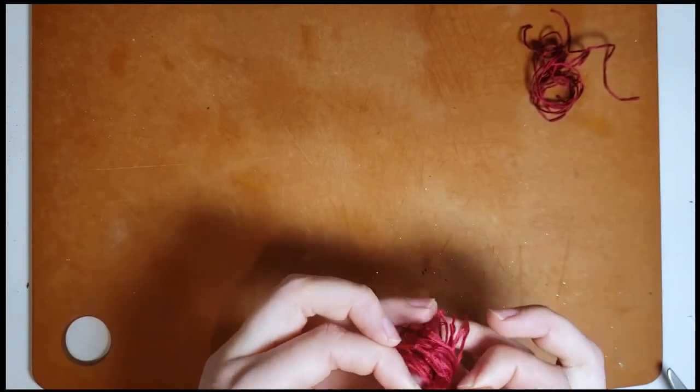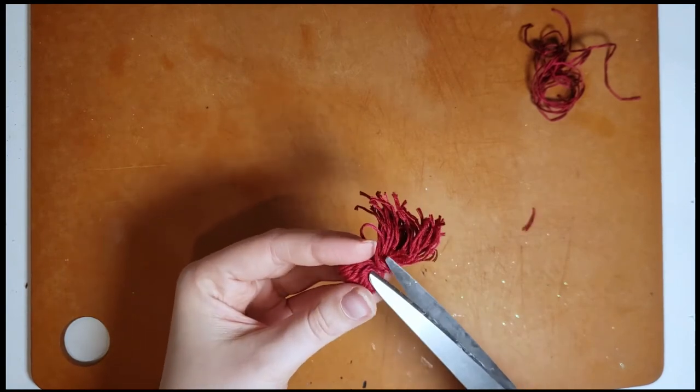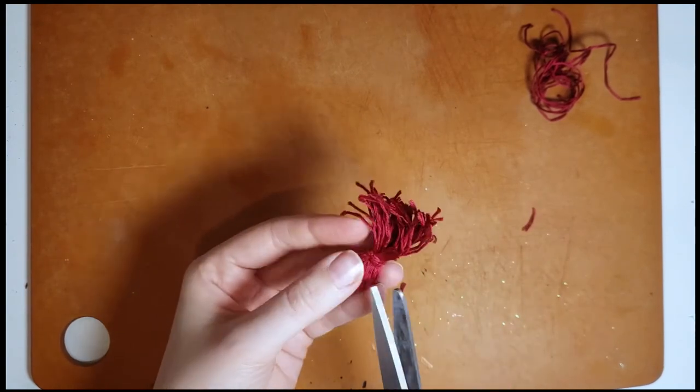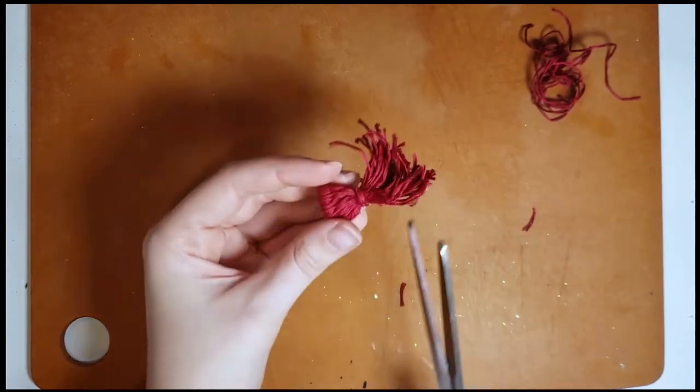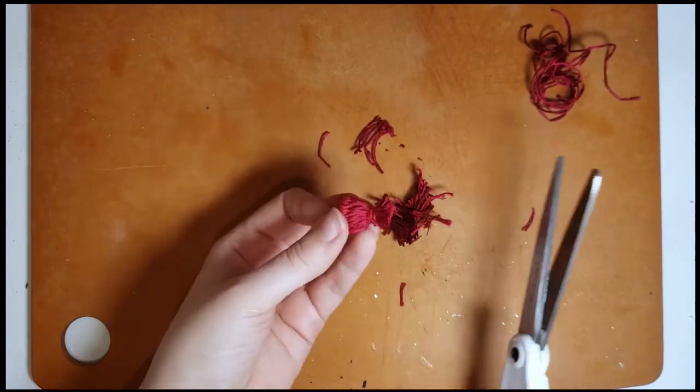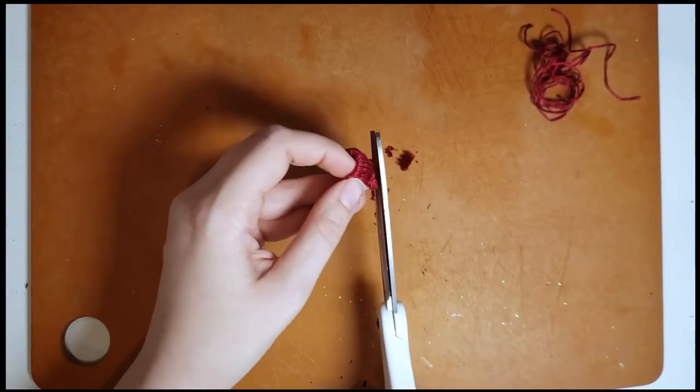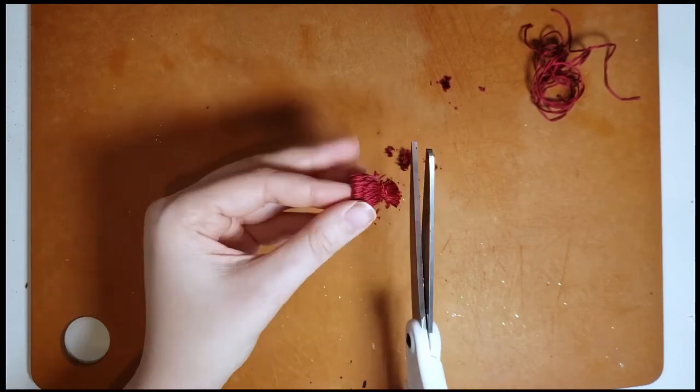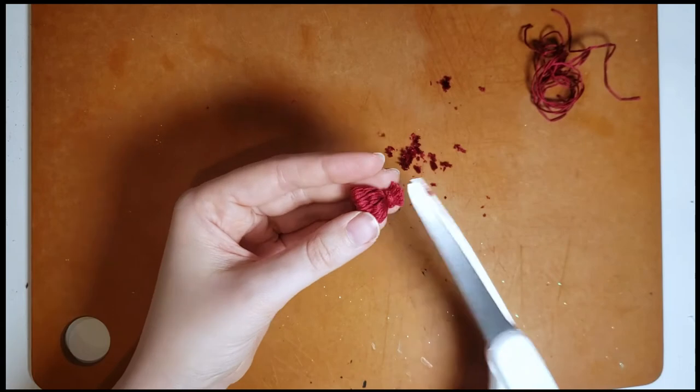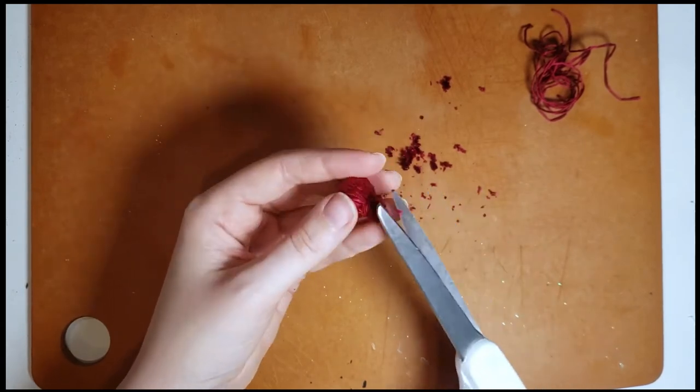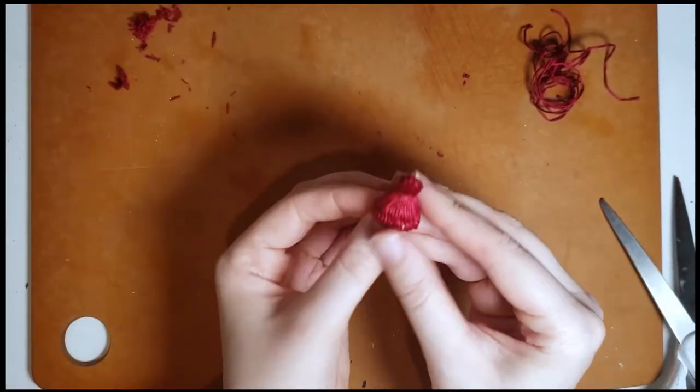And then once I have that done I am going to cut off the top of the hat and start shaping the little pom-pom. It's a very forgiving material so just work at it a little bit at a time and I find this part is very difficult to mess up.